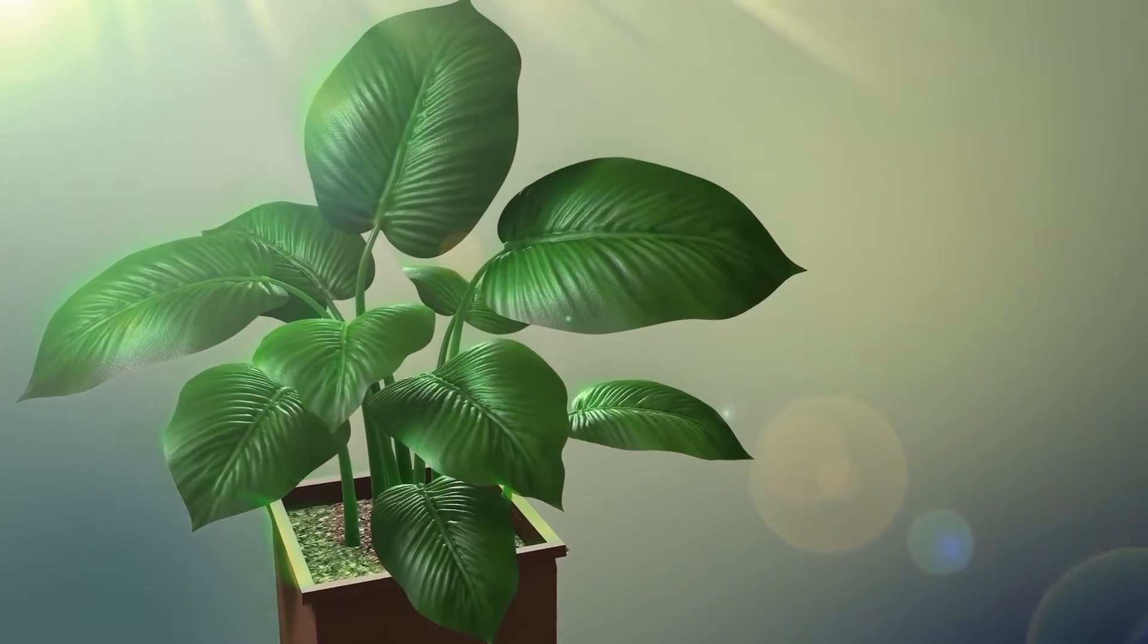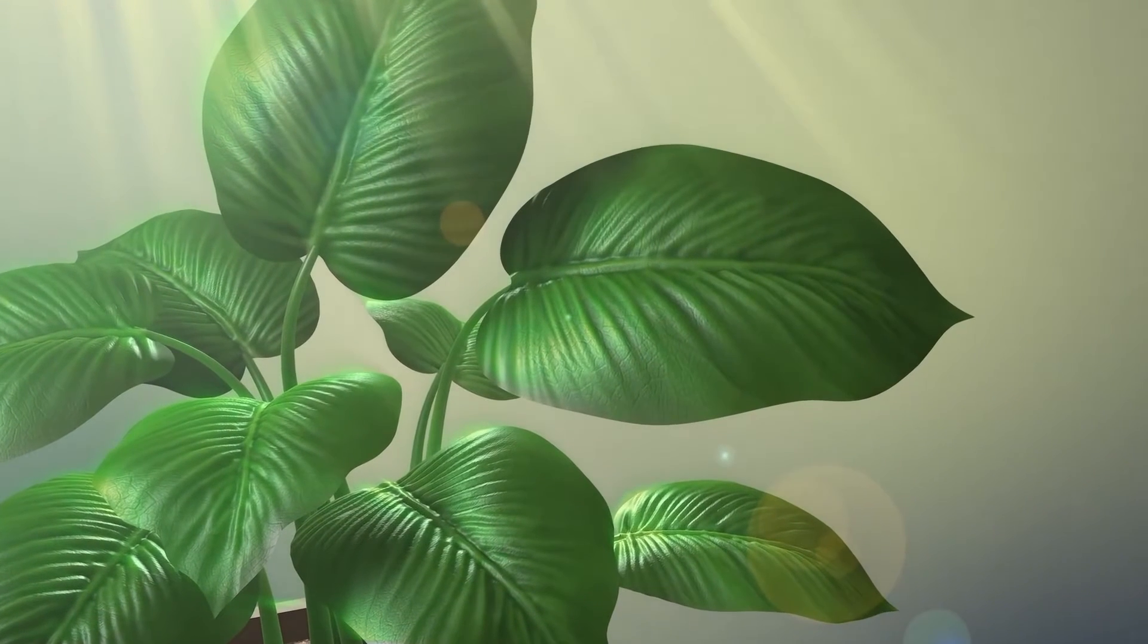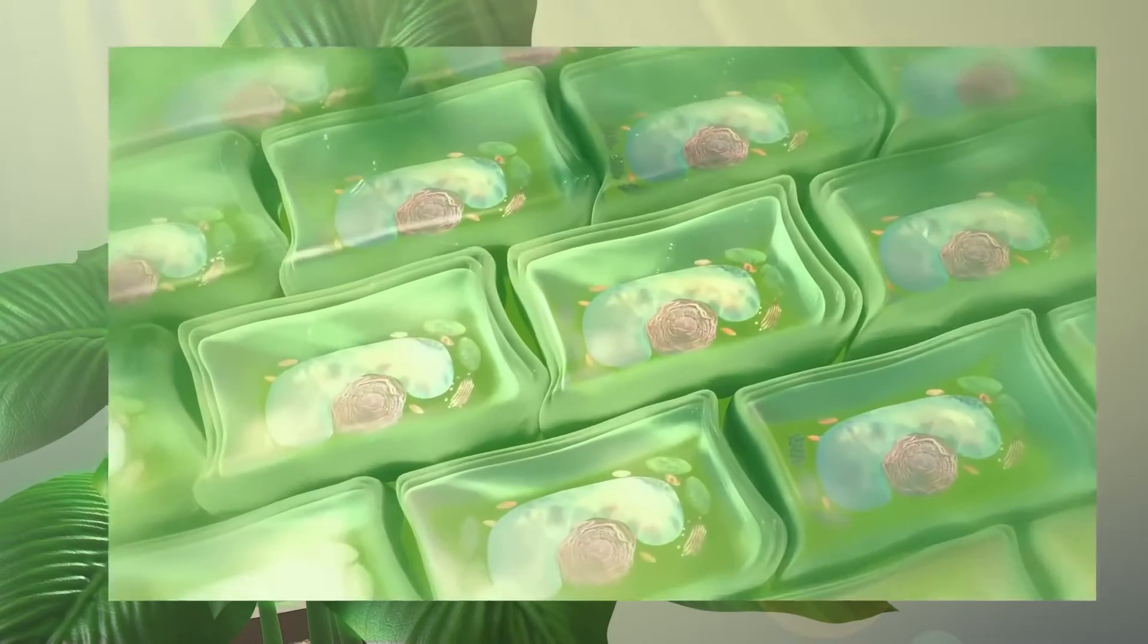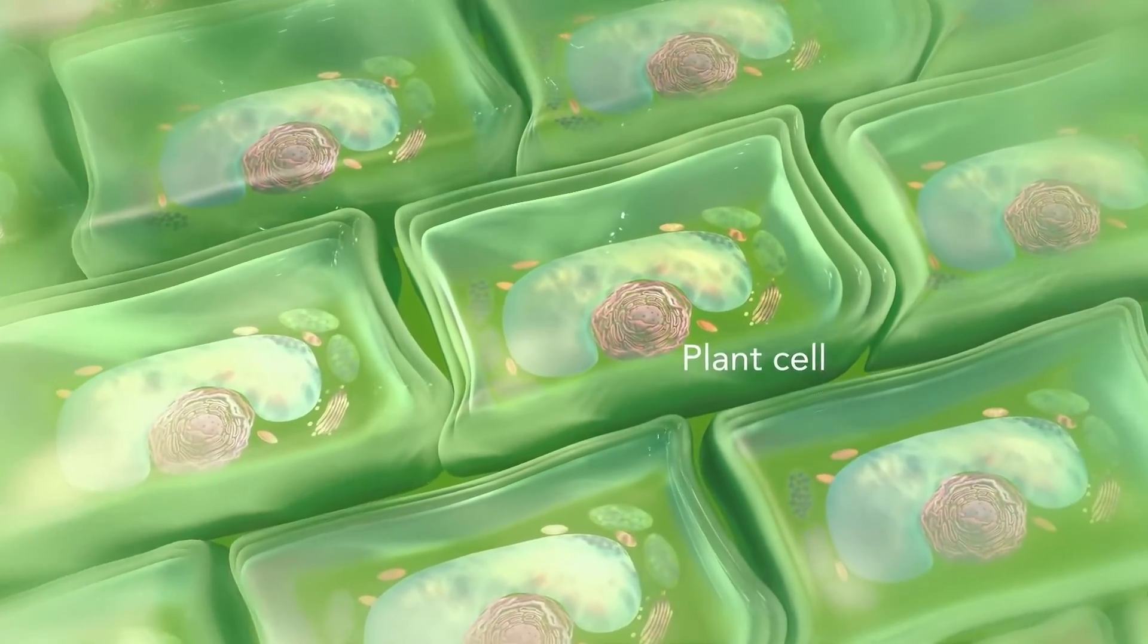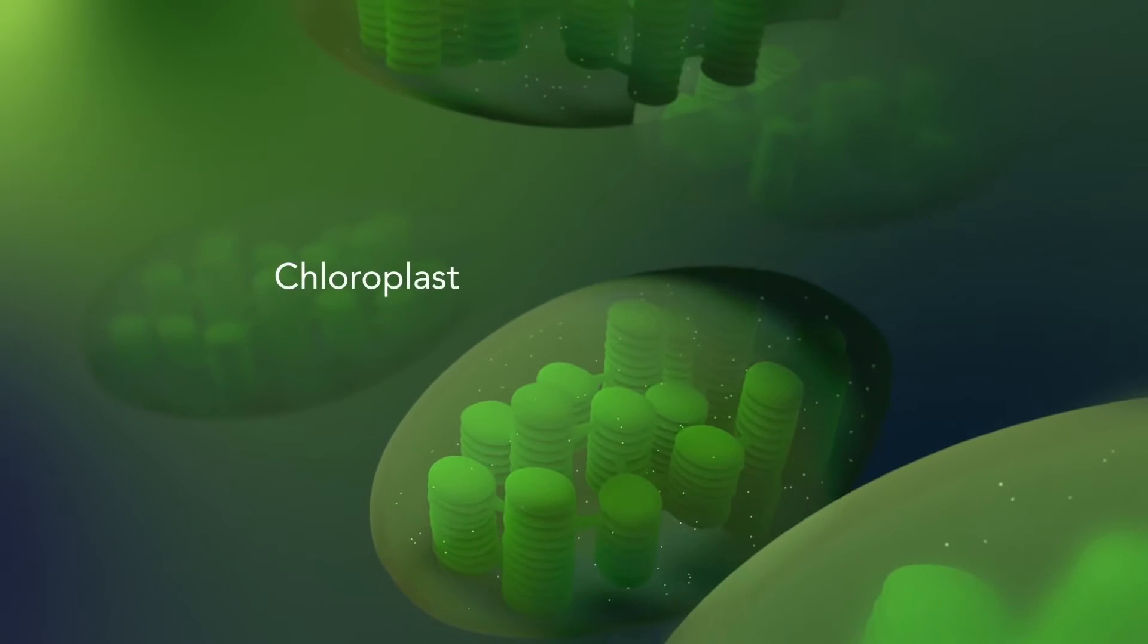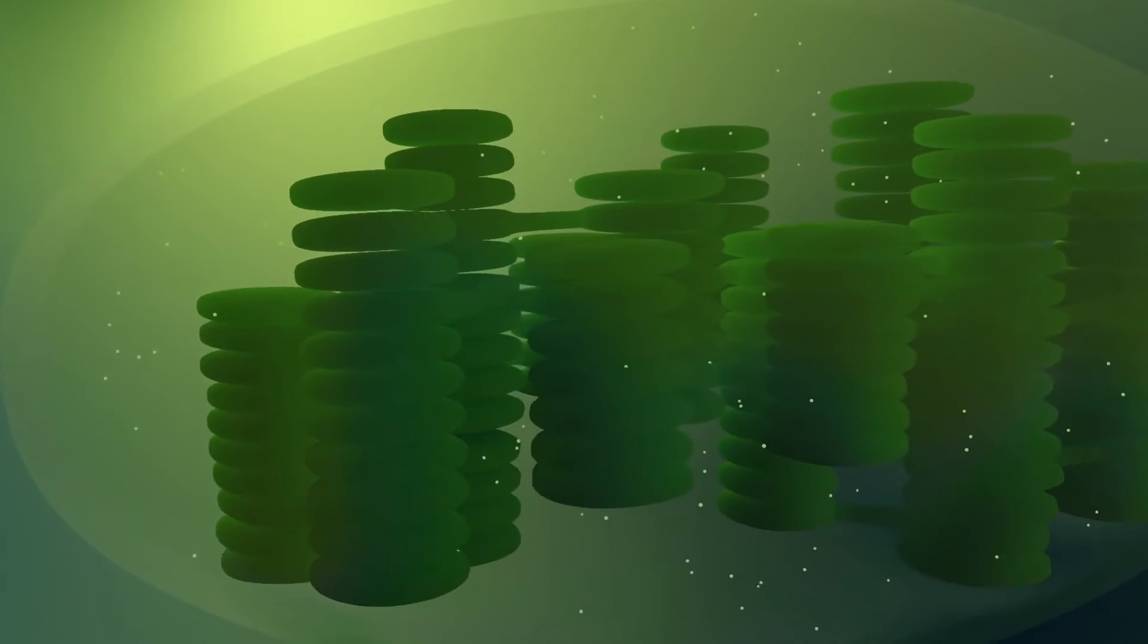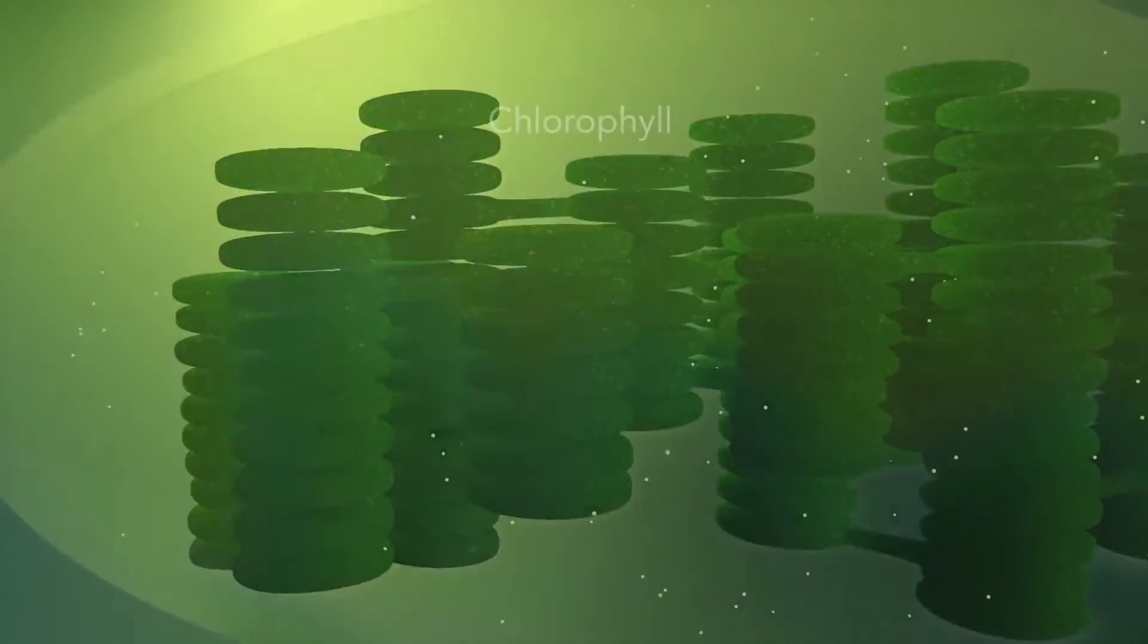Some organisms, such as plants that are photo-autotrophic, meaning they capture sunlight for energy, have cells with an organelle called a chloroplast. The chloroplast is where photosynthesis happens. It's green because it has a green pigment called chlorophyll.